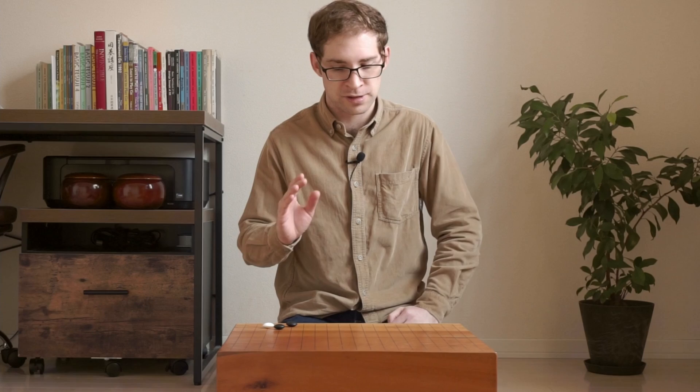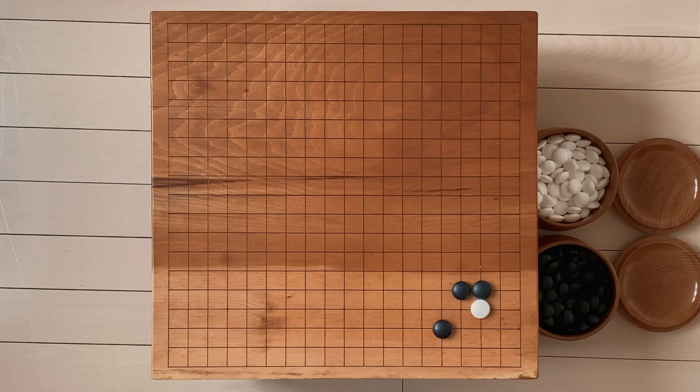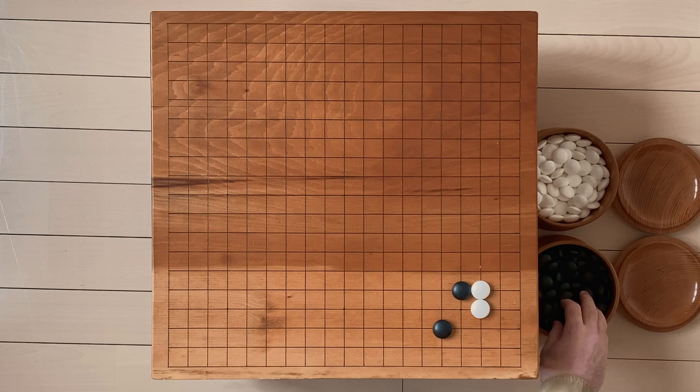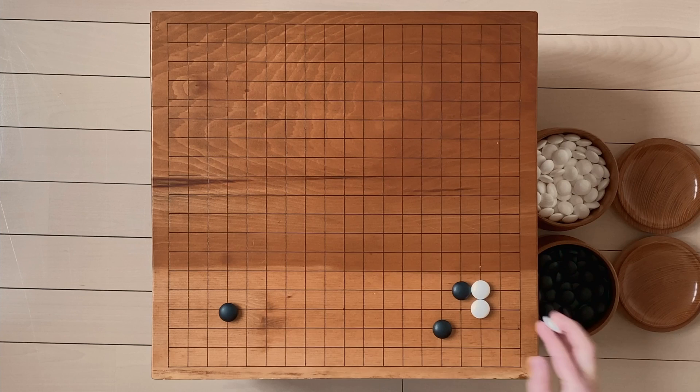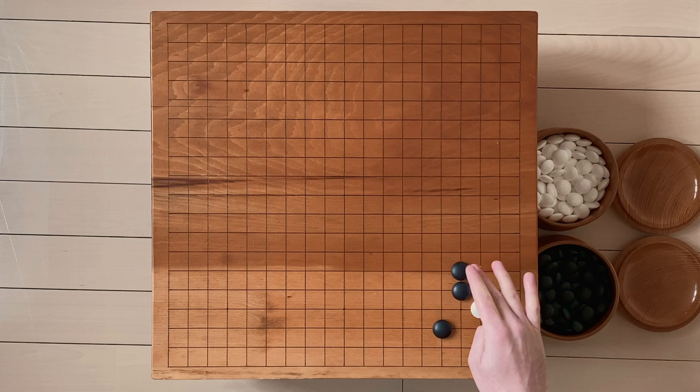And the joseki from here is very simple. White does not want to get sealed in like this, so white will extend. And now, if black plays somewhere else, for example over here, white would just hane and he'd be out. And black's one stone here is looking really weak. So black of course extends again, keeping white pushed onto the side.